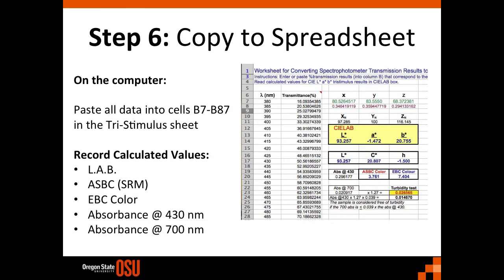The ASBC has prepared a spreadsheet including the calculations needed for many different assessments of color, as well as a check for turbidity. Paste the data in column B, in cells B7 to B87. Record the calculated values that you need. This spreadsheet is available as part of the official methods of analysis provided by ASBC. Included in the recorded calculated values are LAB, ASBC SRM value, degree SRM, EBC color (the European Brewing Congress color value), and the single wavelength absorbance at 430 and 700 nanometers.